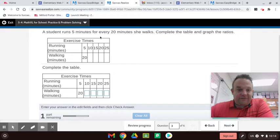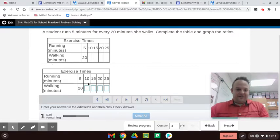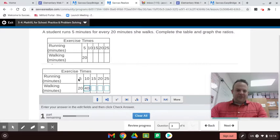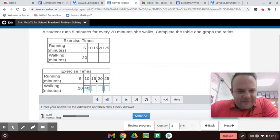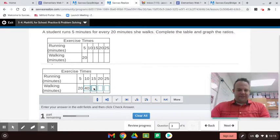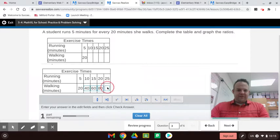All right, a student runs 5 minutes for every 20 minutes she walks. Complete the table and graph the ratios. That sounds about me, I can run about 5 minutes then I've got to walk a while. So look at this. 5 times 2 is 10, so 20 times 2 is 40. So you have a relationship going this way with ratios, and then an XY relationship: 5 times 4 is 20, 10 times 4 is 40. So you have those two relationships there. For the ratio tables we do it like this: 5 times 3 is 15 and 20 times 3 is 60. 5 times 4 is 20, 20 times 4 is 80. 5 times 5 is 25 and 20 times 5 is 100.